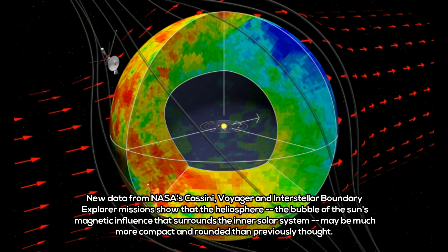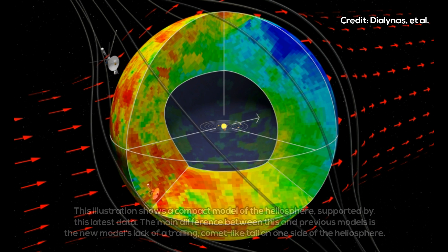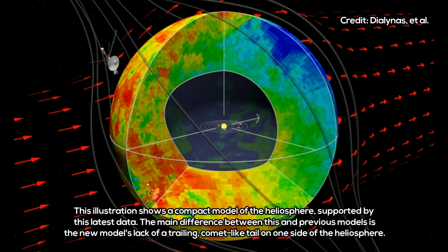The Cassini instrument was designed to image the ions that are trapped in the magnetosphere of Saturn, said Tom Krimigis, an instrument lead on NASA's Voyager and Cassini missions based at Johns Hopkins University's Applied Physics Laboratory in Laurel, Maryland, and an author on the study.